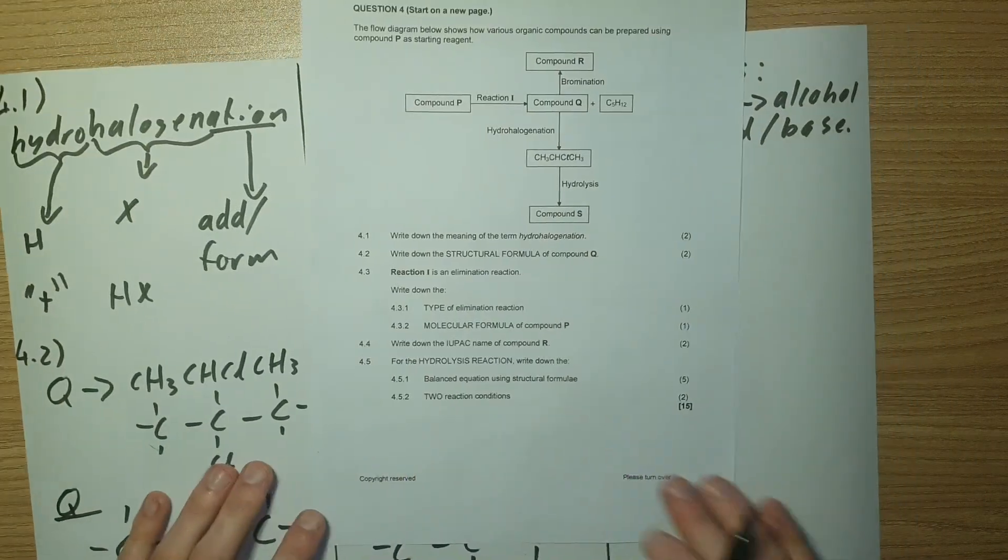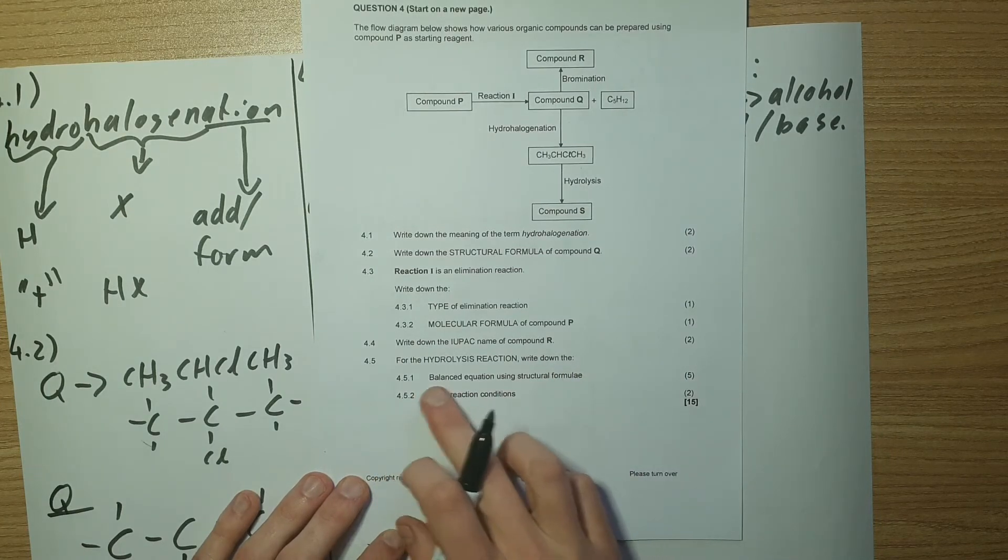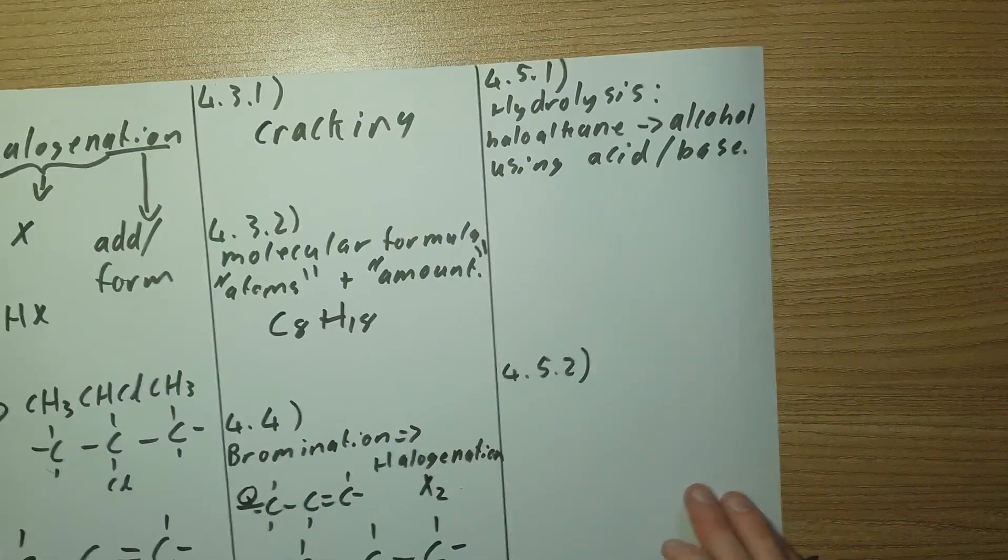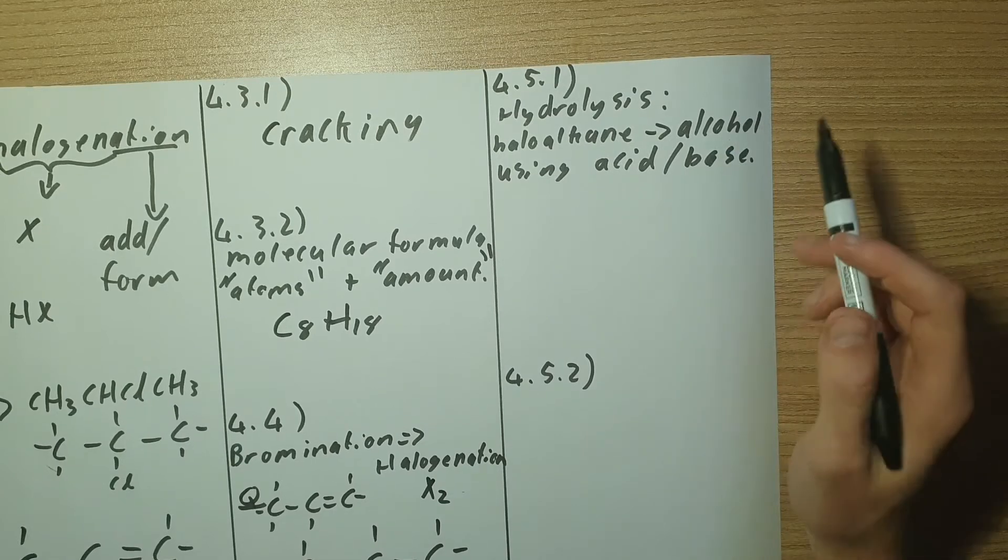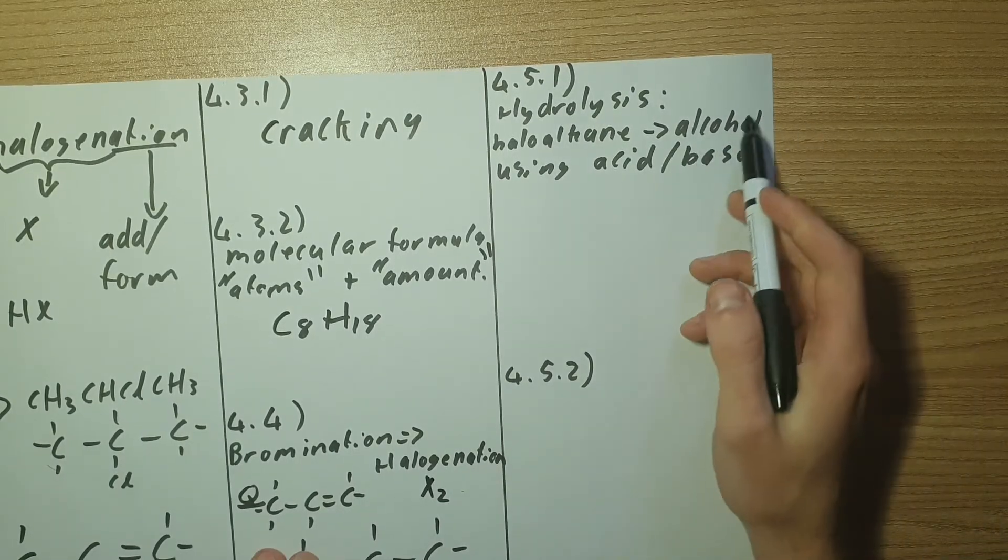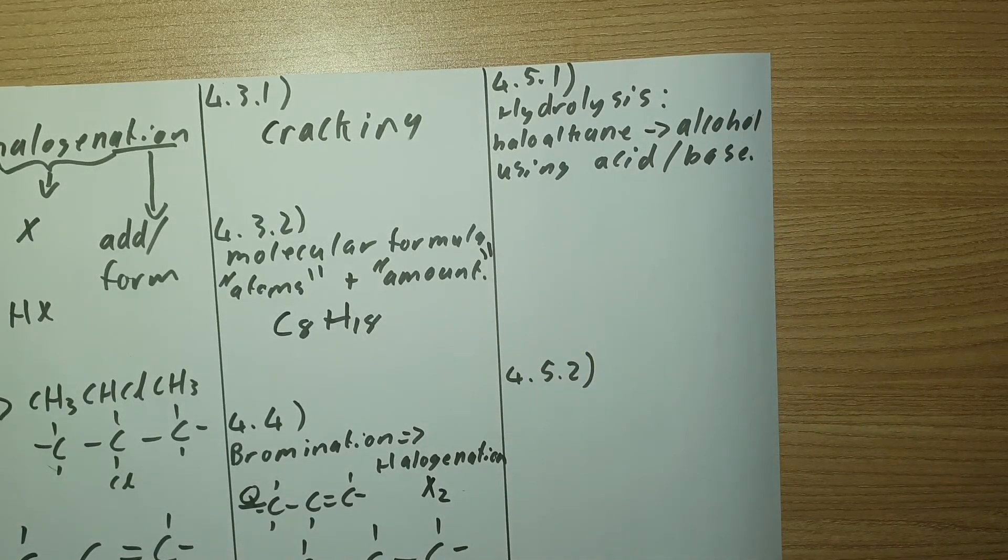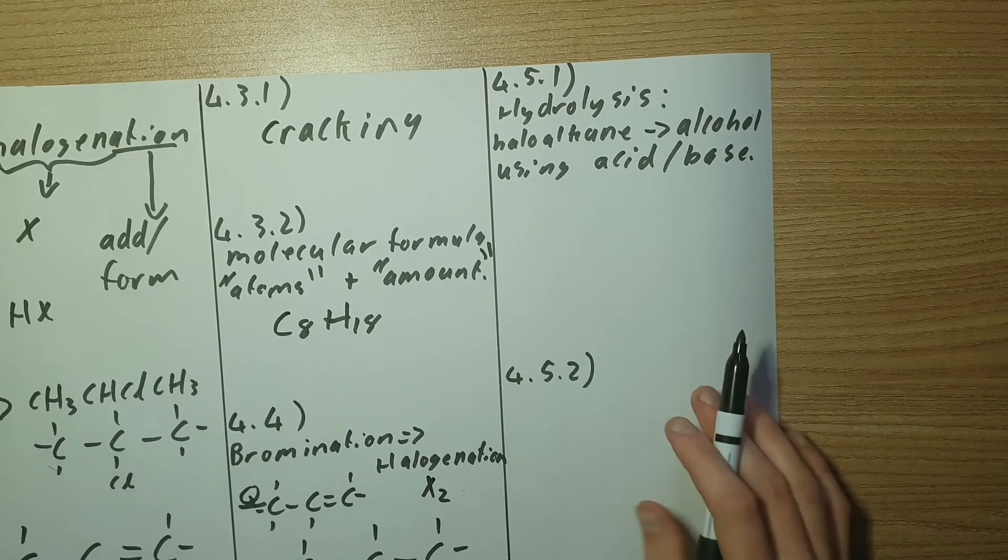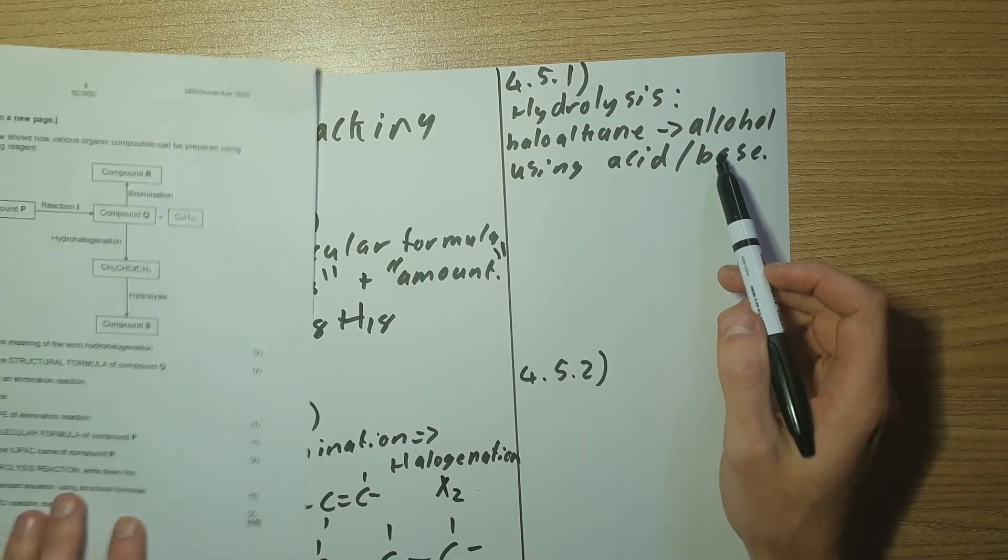Now 4.5 says from the hydrolysis reaction write down 4.5.1 the balanced equation using the structural formulas. Now remember hydrolysis takes place when we're going from a haloalkane to an alcohol. So the reverse reaction of this would be going from an alcohol to a haloalkane, that would be a hydrohalogenation process. Now we're reversing the hydrohalogenation process and we're using a strong acid or a strong base to do this.